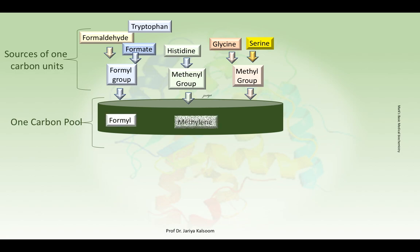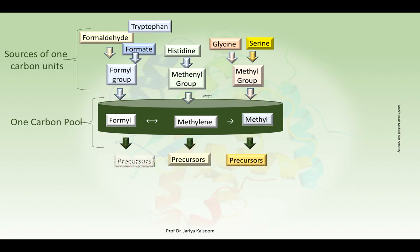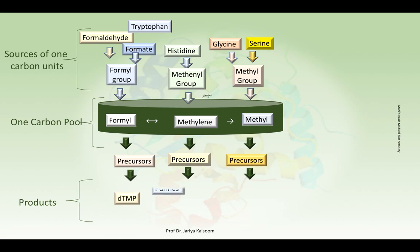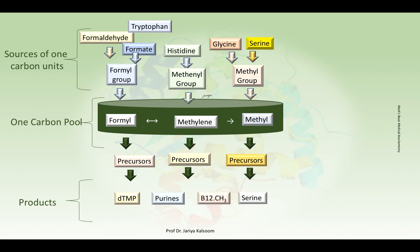The amino acid serine is the major source of one-carbon groups in humans. Its hydroxymethyl group carrying the one-carbon fragment is transferred to tetrahydrofolate in a reversible reaction. Since serine can be synthesized from 3-phosphoglycerate, an intermediate of glycolysis, dietary carbohydrate can also serve as a source for the one-carbon pool.